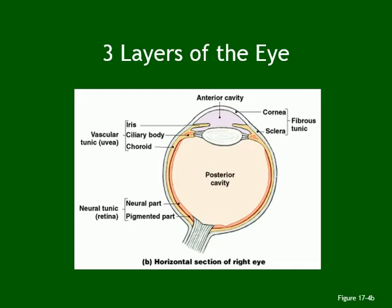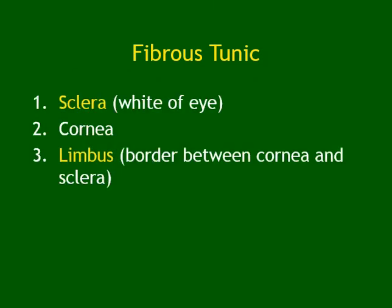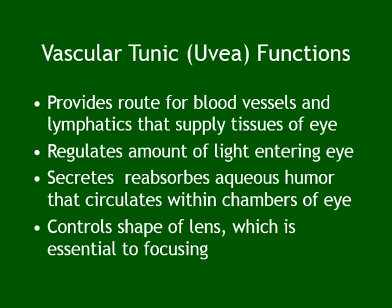To summarize: we have the outer fibrous tunic, middle vascular tunic, and inner neural tunic. The fibrous tunic consists of the sclera and cornea. Between them is called the limbus — the border separating the cornea from the sclera. The vascular tunic is also called the uvea. Uvea is another name for the vascular tunic; it is not the same as the cornea.